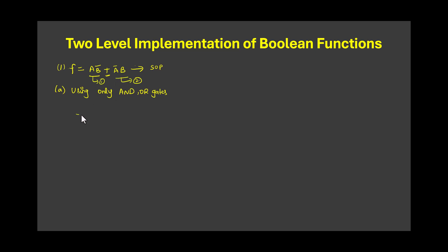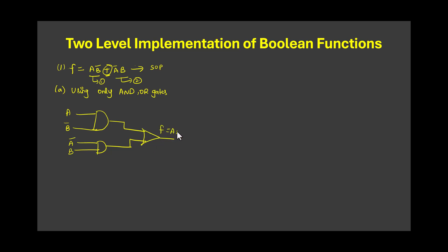The first AND gate takes inputs A and B̄, and the second AND gate takes inputs Ā and B. Then there is a sum between these product terms, so I implement that with an OR gate. This gives F = AB̄ + ĀB. This is Level 1 (AND gates) and Level 2 (OR gate).